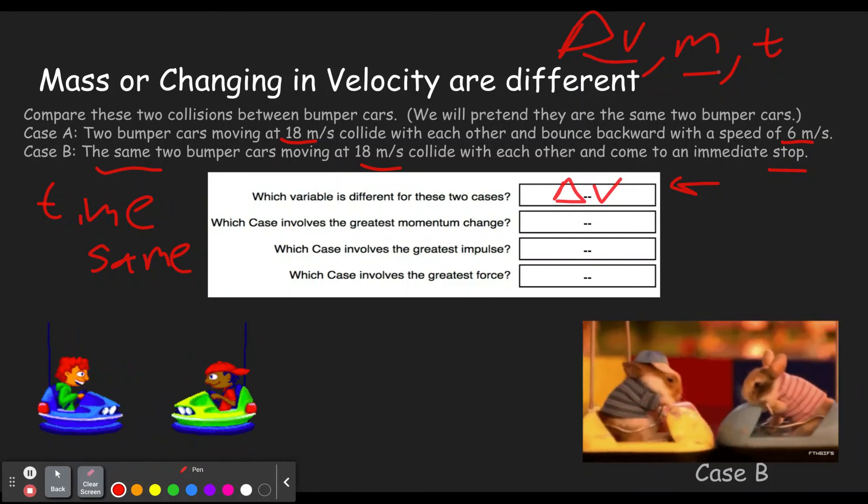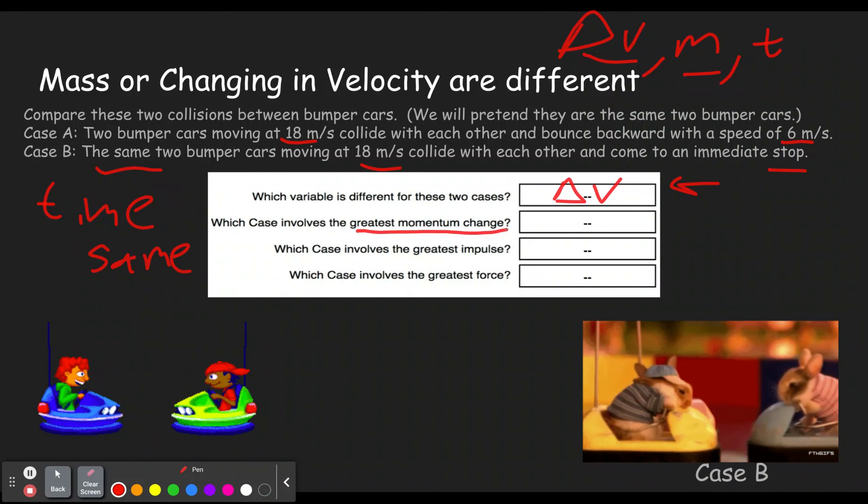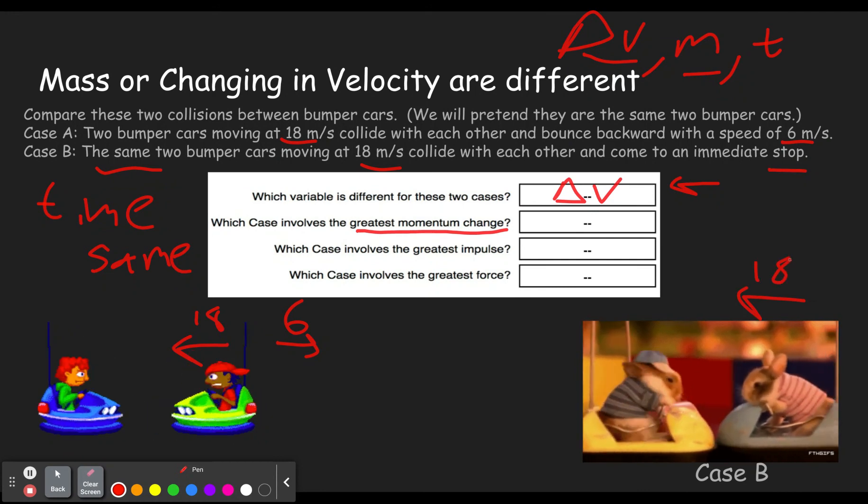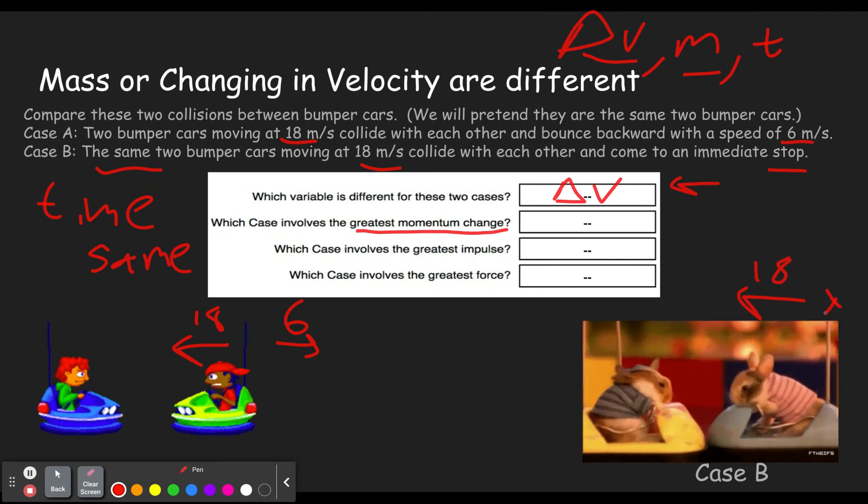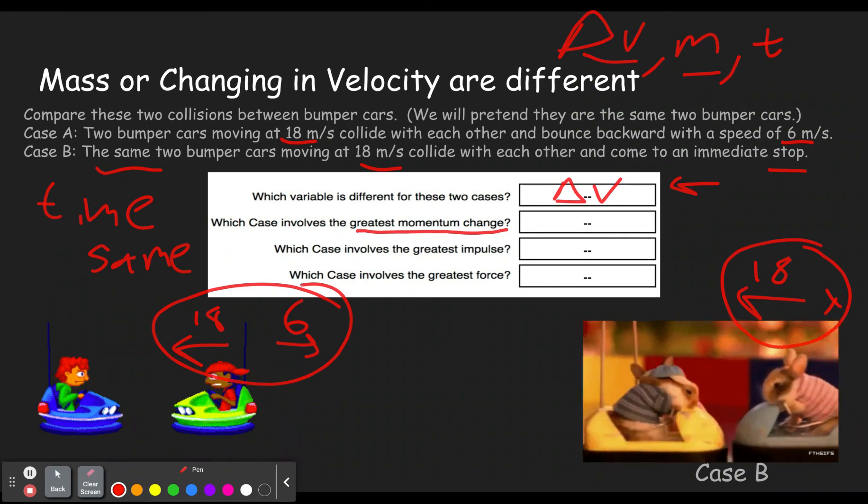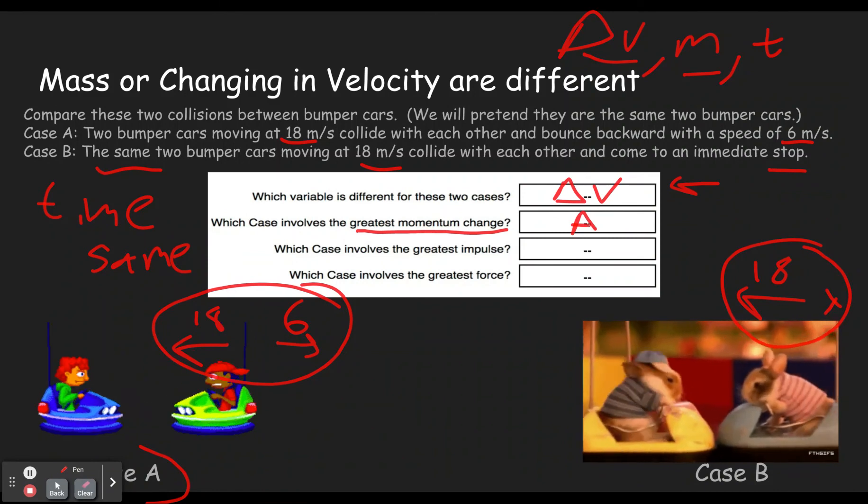So when you find that either delta V or M is different, then to find the greatest momentum change, you just need to figure out which one has the bigger delta V or the bigger mass. In this case, it's delta V. So over here, it starts with 18 going this way, and it ends with 6 going the opposite direction. Over here, we start with 18, and it ends up stopped. So this will be a change of 18. This is a change of 24, because it went from 18 one way to 6 the other way. It had to stop, and then it kept changing direction to go 6 back the way it came. So in this case, case A is bigger because the change in velocity was bigger.